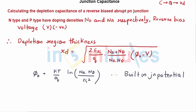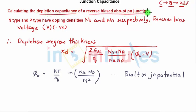Now let's understand the basics of how we calculate the depletion capacitance of a reverse-biased abrupt PN junction. The drain-to-substrate junction is always reverse biased, so we are concerned with an abrupt PN junction. To calculate the capacitance, I need to find the total depletion region thickness XD, where the charge is present.